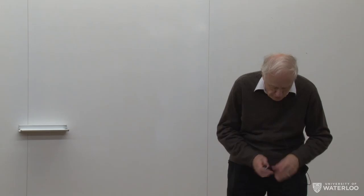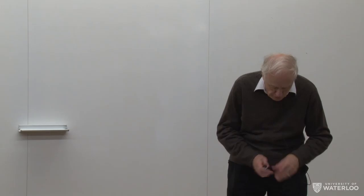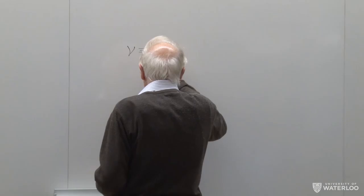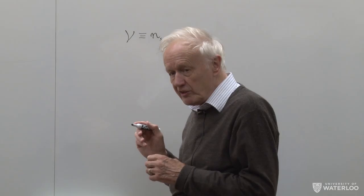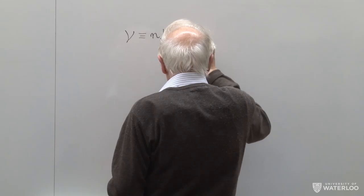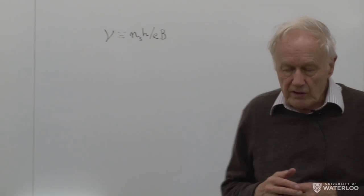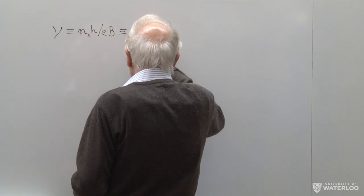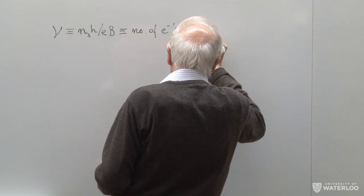There is one very crucial variable, the filling factor ν, which is defined to be the number of electrons per unit area times h over eB. The easiest way to remember it is that ν is the number of electrons per flux quantum.